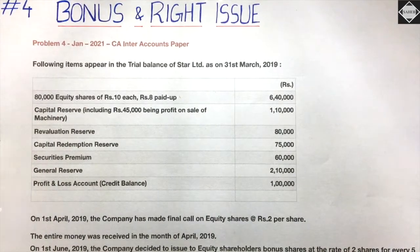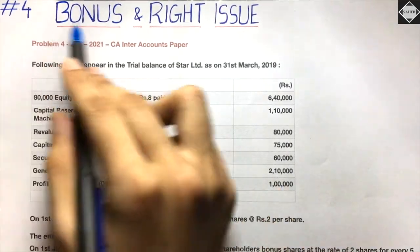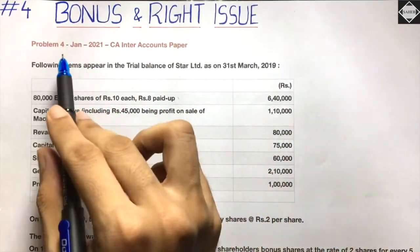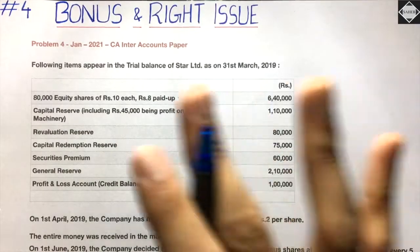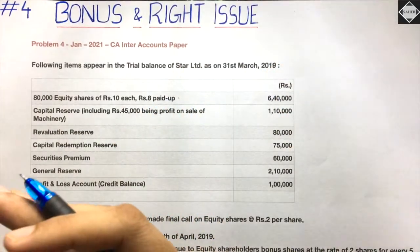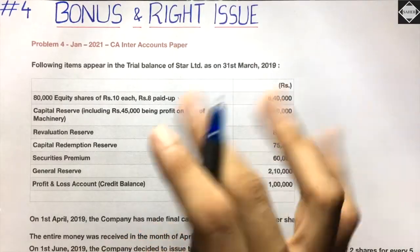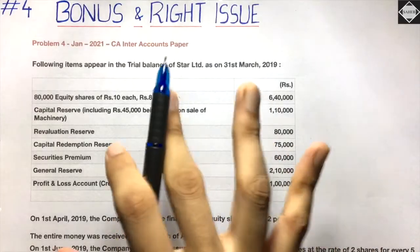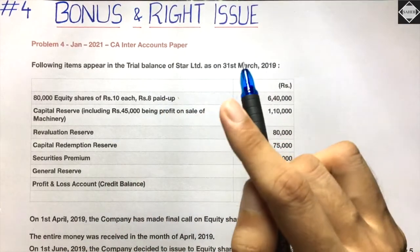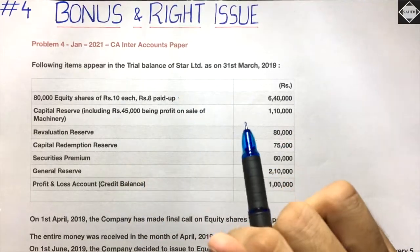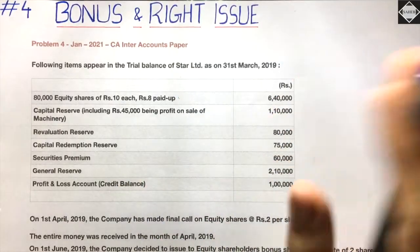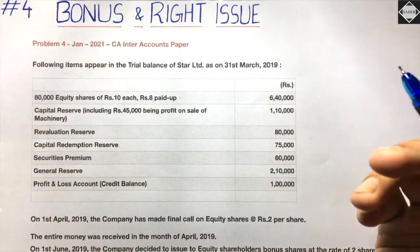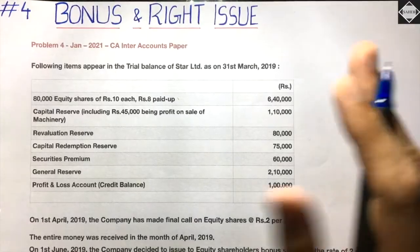Hi everyone, welcome back to Sahab Academy. Today in this fourth video of the Bonus and Right Issue chapter, we are going to solve a bonus question which was asked in the January 2021 CA Inter paper. Please make sure you have watched the previous videos of this chapter where we discussed the entire concept of bonus and solved three problems. There is one more question in Chapter 8 on Redemption of Preference Shares which also includes a bonus issue — that kind of question can also come in the exam.